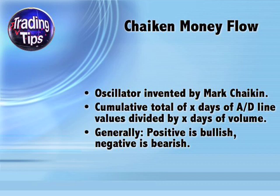His formula takes the cumulative total of X days worth of accumulation distribution line values and divides that sum by the sum of X days worth of volume numbers. This is a rolling average type of number, so if X is set at 21, then each new trading day, the oldest of the 21 daily values is dropped off the average.